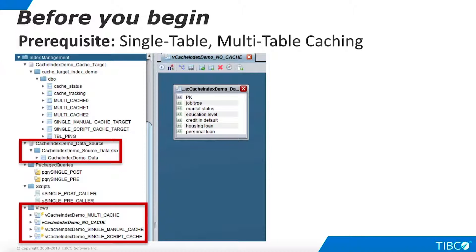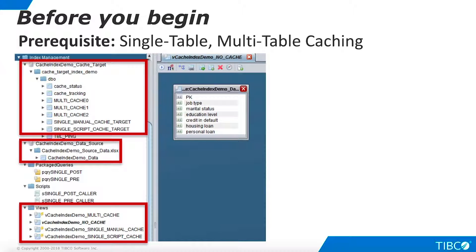We create four simple identical views against this table. One view is not cached. A second view is cached to a single table cache and used to illustrate manual index creation. A third view uses single table caching to illustrate index management via TDV scripting. A fourth view is cached to a multi-table cache and used to illustrate multi-table index management. Our cache target for this demo is a Microsoft SQL Server database, though you may use any supported database. This demo uses two packaged queries and two SQL scripts.